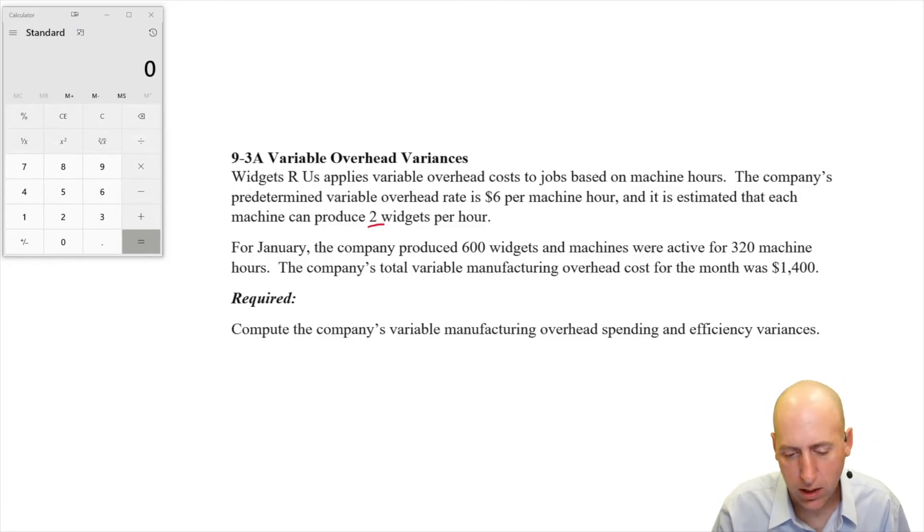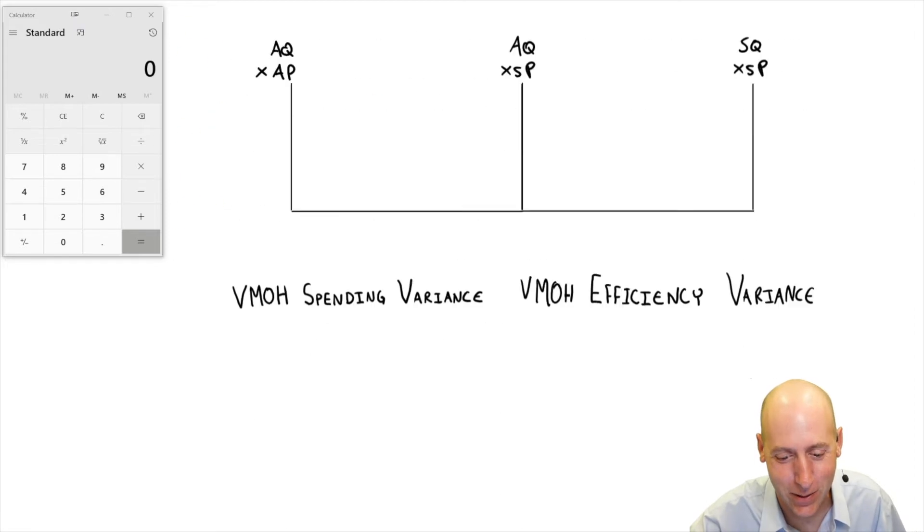For January, the company produced 600 widgets and machines were active for 320 machine hours. The company's total variable overhead cost for the month was $1,400. We've got a bunch of actual info here. We've got a bunch of standard info up there. We've got the makings of some variance analysis. Let's get to it.